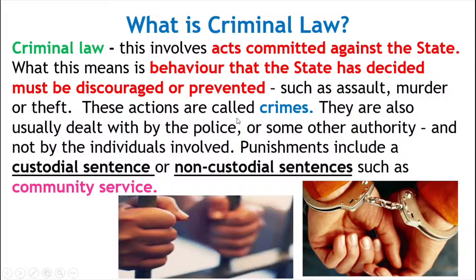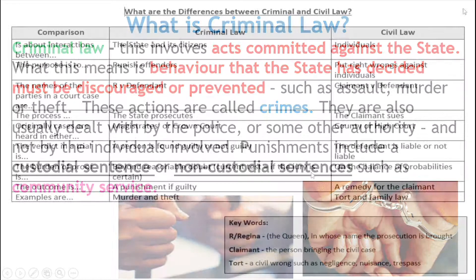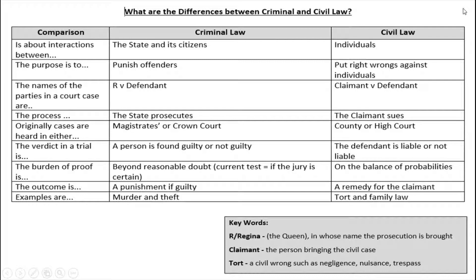These actions are called crimes. They are usually dealt with by the police or some other authority, and not by the individuals involved. Punishments include a custodial sentence — a punishment where your freedoms and liberties are taken away from you, such as prison — or a non-custodial sentence, which covers sentences that do not take away your freedoms or liberties, such as community service.